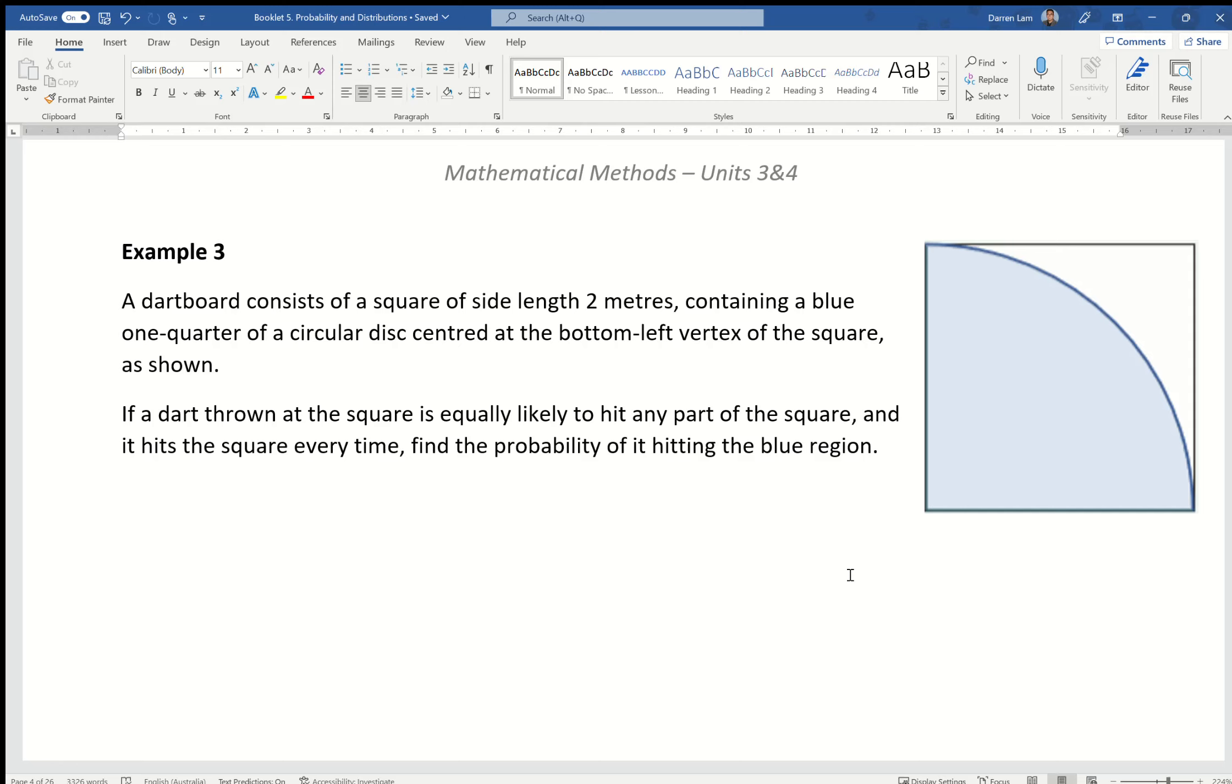Classic probability question. In this situation we've got a dartboard where each side is two meters long, containing a blue one-quarter of a circular disc centered at the bottom left vertex of the square. If the dart is thrown, it's equally likely to hit any part of the dartboard. We need to find the probability of it hitting the blue. Just like we did before, we find the area of the blue divided by the total, and that gives us a probability.